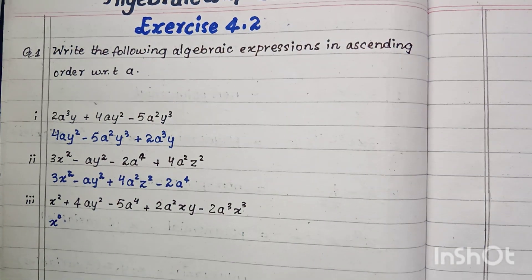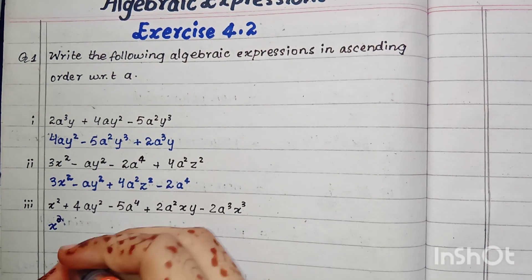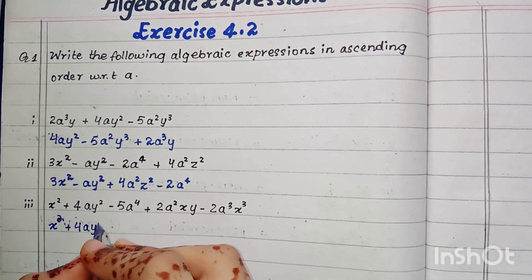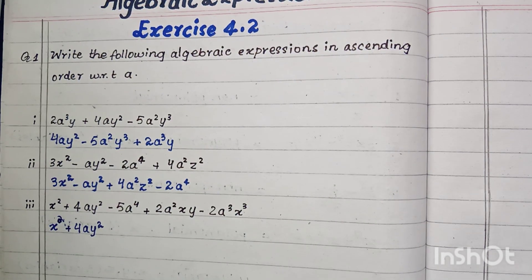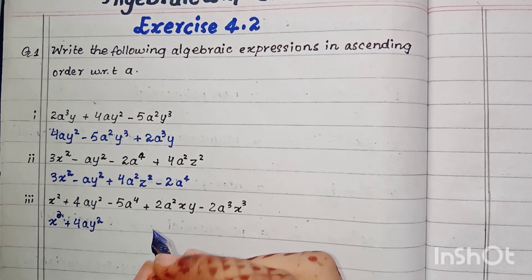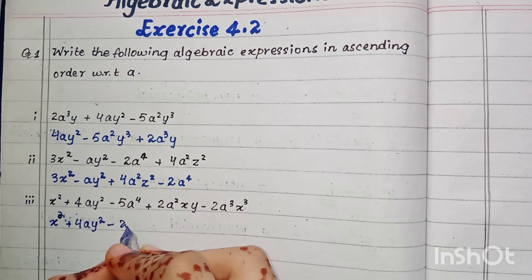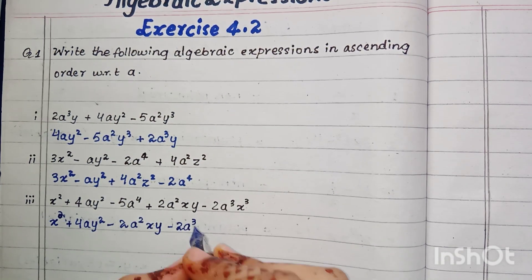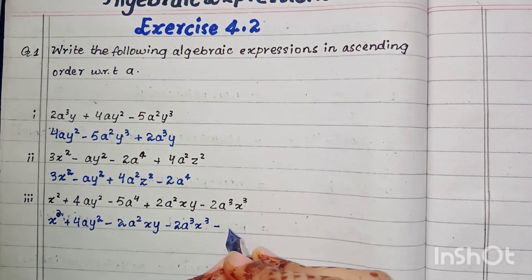In part three, the smallest power of variable a is also zero because in the first term a is not mentioned — when the power of a variable is zero, that variable is not shown. So we write x² first, then plus 4ay² because the power of a is one, then 2a²xy, then minus 2a³x³, and minus 5a⁴.